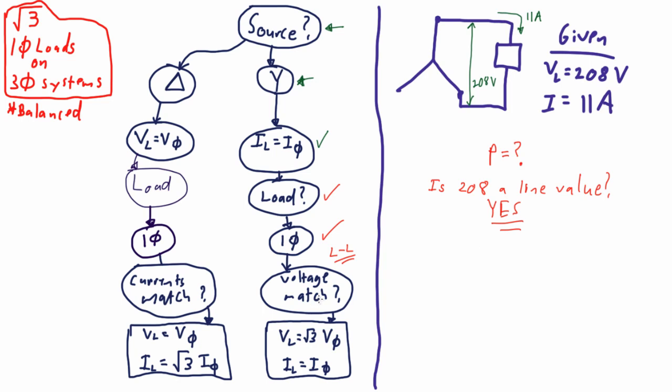Now from our previous work in the flow chart, we realized that if we can answer yes to that particular question, then root 3 is not required in our power calculation. There's no need to convert voltage from one thing to another. We have the line voltage and we have a line to line connection.